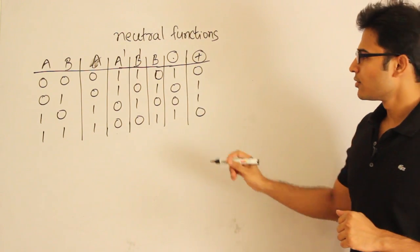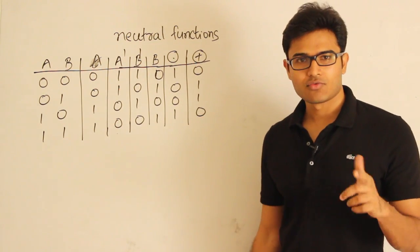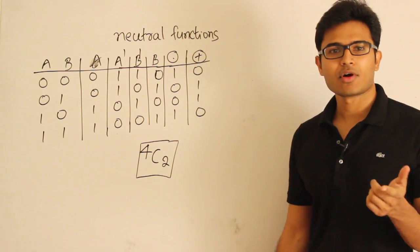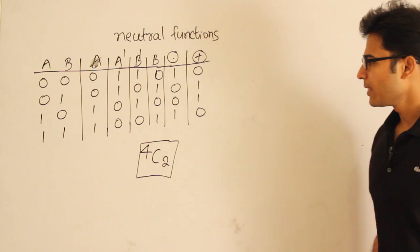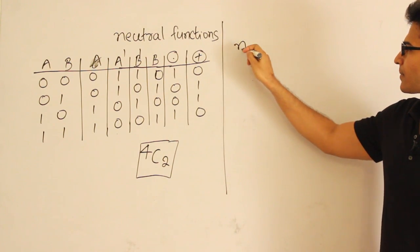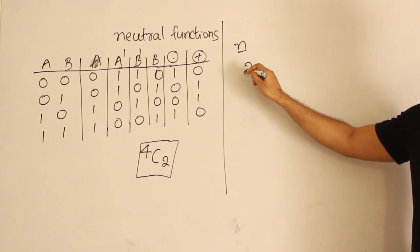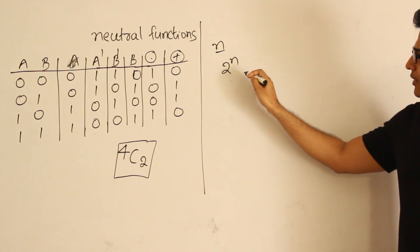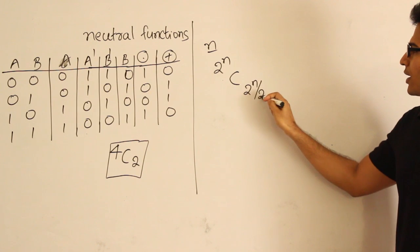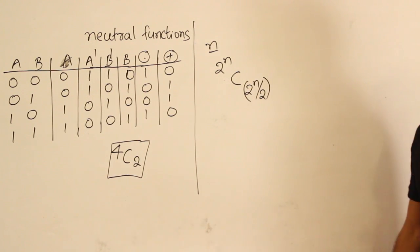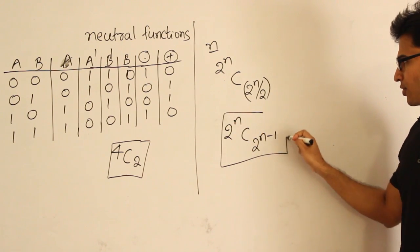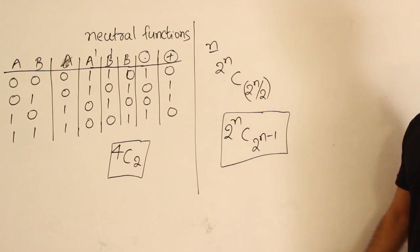In general, with n Boolean variables, how many neutral functions are possible? There are 2 power n total input combinations. Among all these inputs, you assign exactly half of them — that is 2^n divided by 2, which equals 2^(n-1) — the value 1, and the remaining half automatically get 0. Therefore, the number of neutral functions with n Boolean variables is 2^n C 2^(n-1).